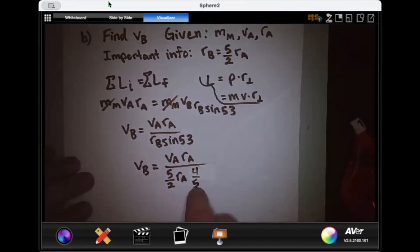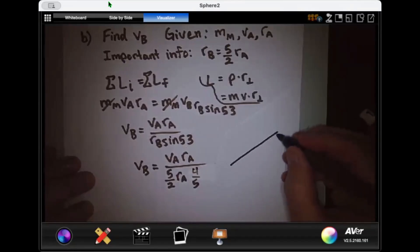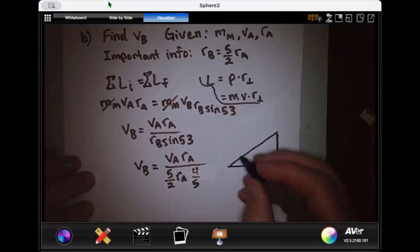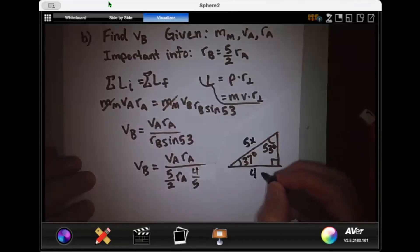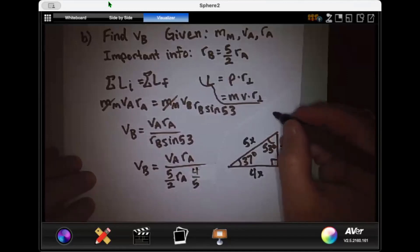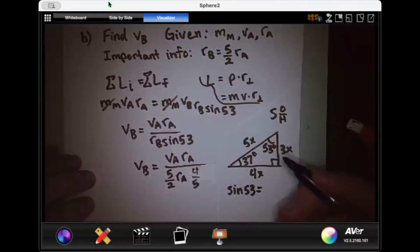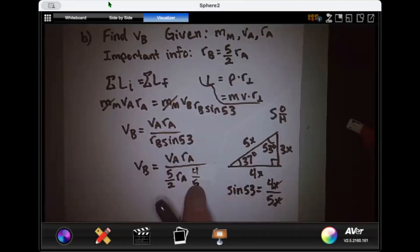Where did 4 fifths come from? Well, 4 fifths is sine 53. Let me prove it to you. A lot of people forget about this special triangle right here. This is a 37, 53, 90. And with this triangle, this side is 5x, this side is 4x, and this side is 3x. And what is sine again? It's opposite over hypotenuse. So the sine of 53 would be equal to 4x, the opposite side, over the hypotenuse, 5x. The x's cross out, and sine of 53 is 4 fifths. So I'm plugging that in for the sine of 53 right there.